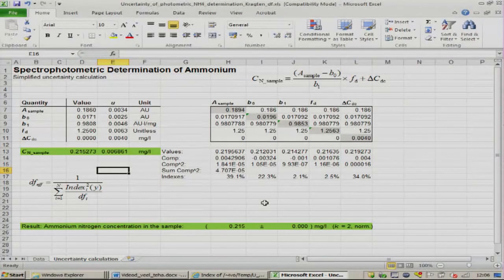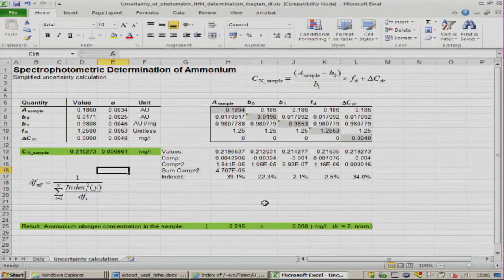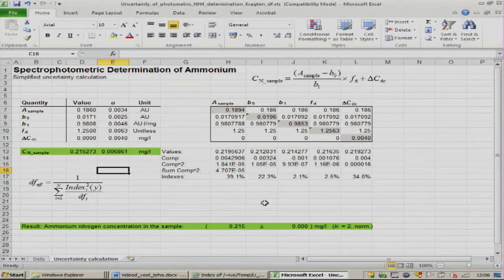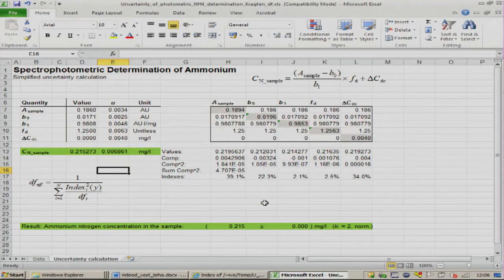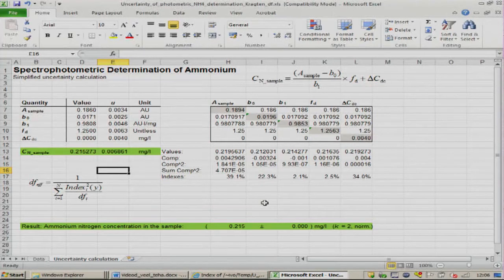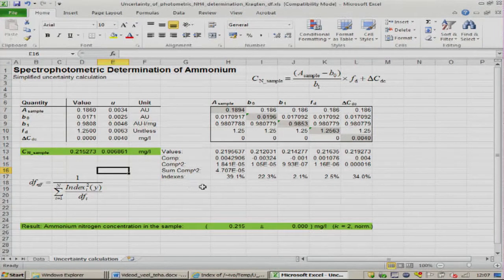Let us see now how the Welch-Satterthwaite approach for calculating the effective number of degrees of freedom works in practice. Using the effective number of degrees of freedom, we can define a coverage factor which corresponds to a predefined probability. We will look at this on the example of the ammonium nitrogen uncertainty calculation, which we saw previously.